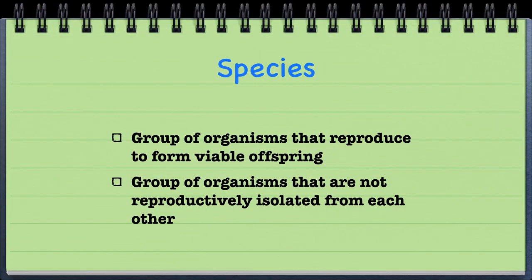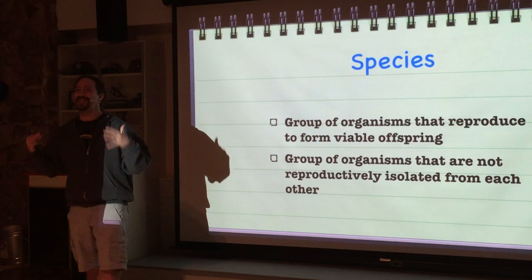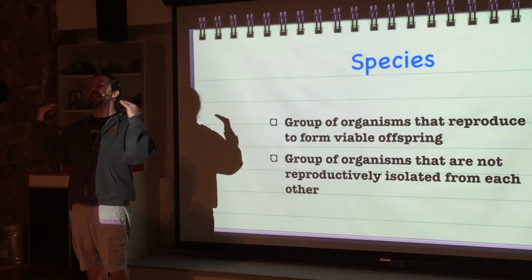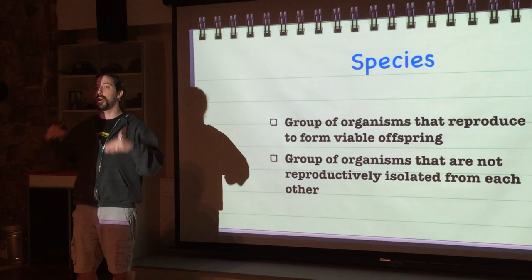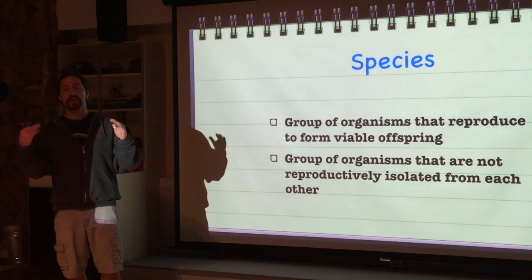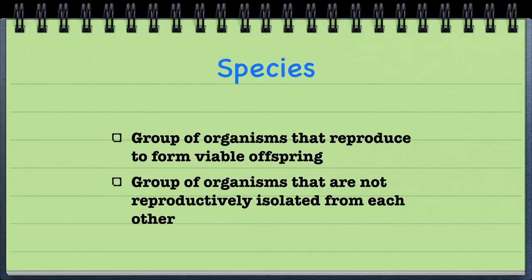First off, what makes up a species? Well, species are able to reproduce with each other and have viable offspring. What does that actually mean? It means that their offspring are also able to have offspring. So if the offspring of two different groups are always sterile, that means they are not the same species because they don't have viable offspring.